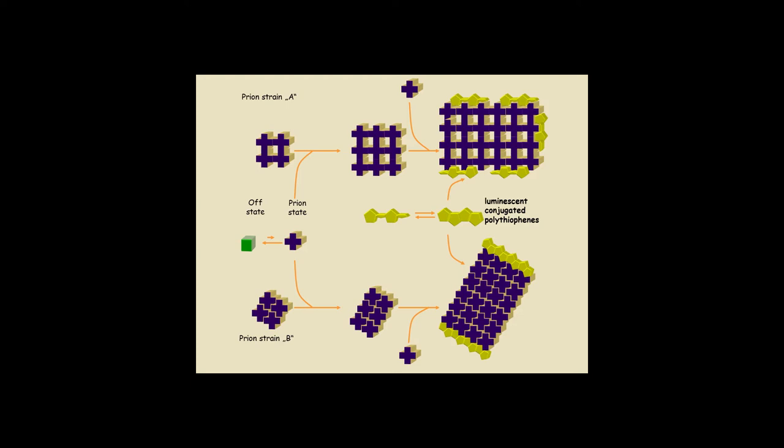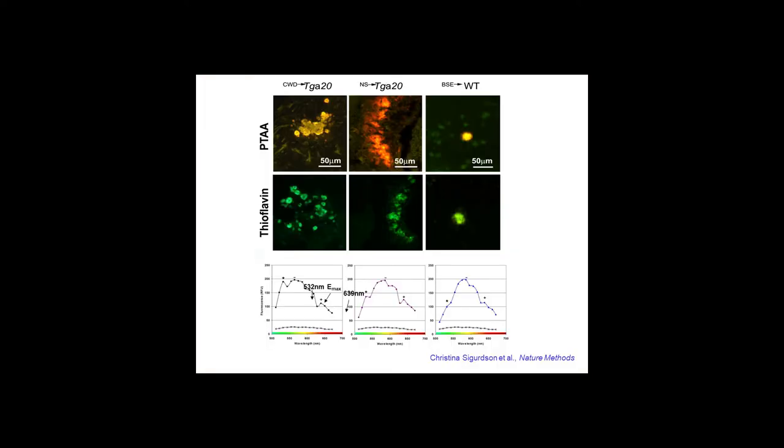Now, but because, but if the theory is correct, if the idea is really that you have different conformations, then actually, when the thiophene intercalates, it may acquire a different conformation in the different strains. And because, and then we can read it out by spectrofluorimetry, because the colors will be different.